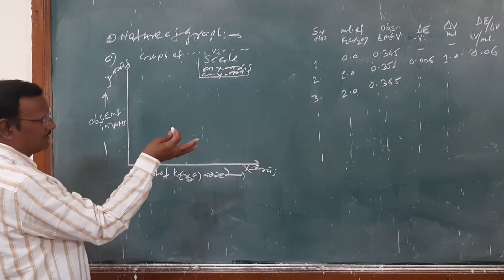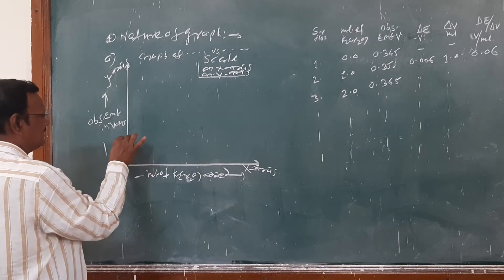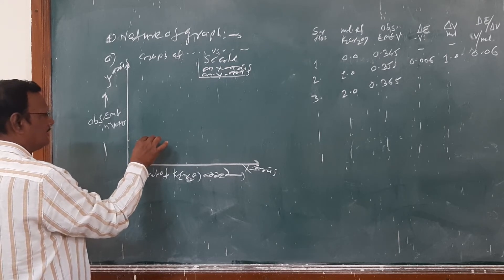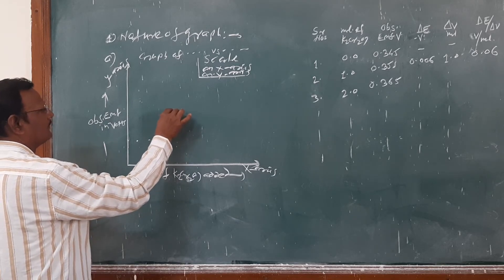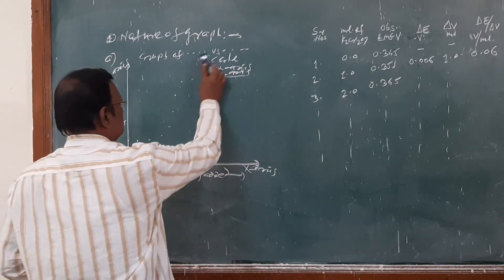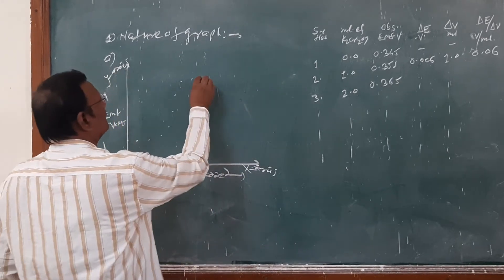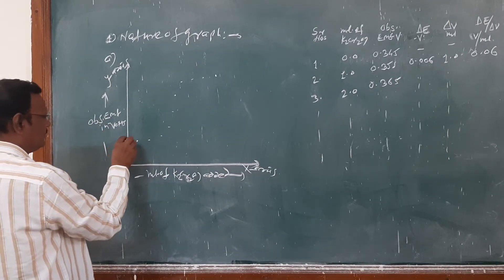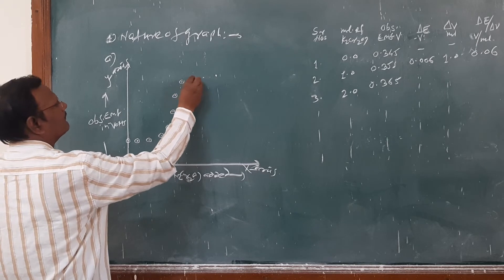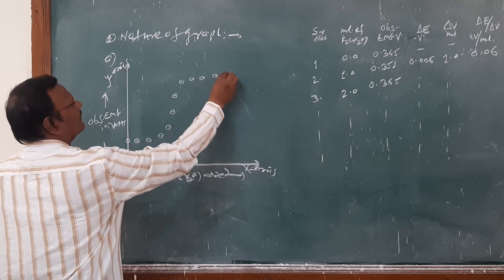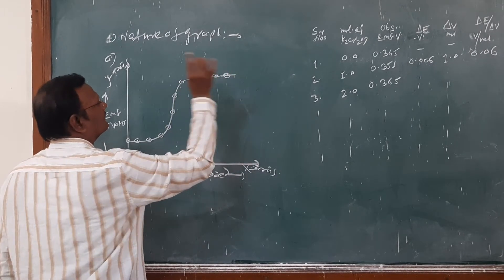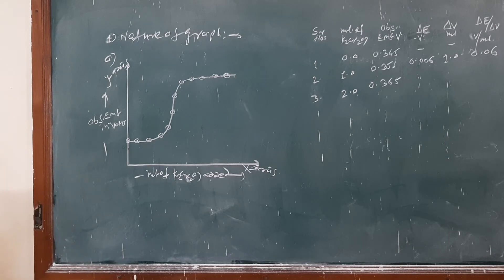One by one we have to represent the nature of graph by using the table. On the x-axis: 0 mL, 1 mL, 2 mL, 3 mL, 4 mL, 5 mL, 6 mL, 7 mL, 8 mL, 9 mL, and so on. We plot each point marked with a circle, and join all the points. This is the first nature of graph, graph A.